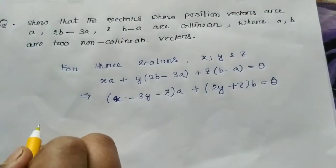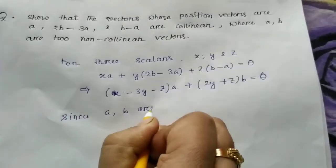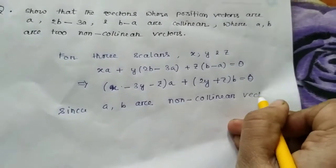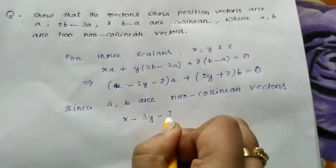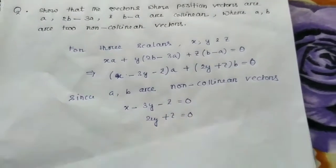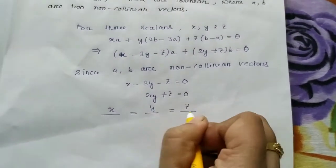Since a, b are two non-collinear vectors, then we have x minus 3y minus z equal to 0, and 2y plus z equal to 0.